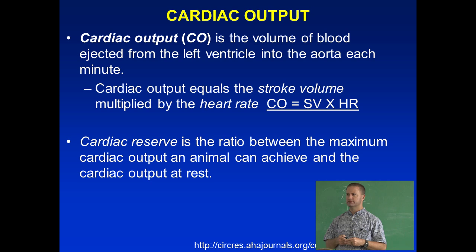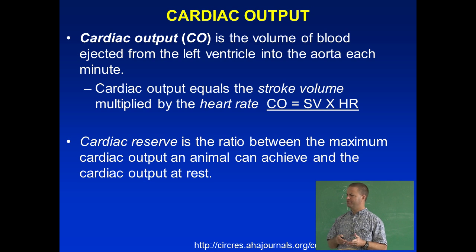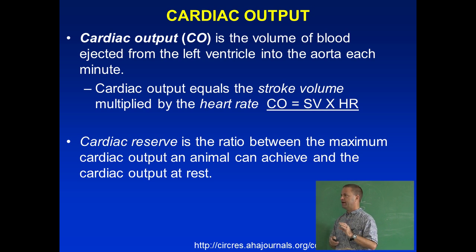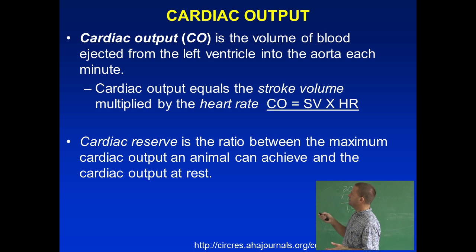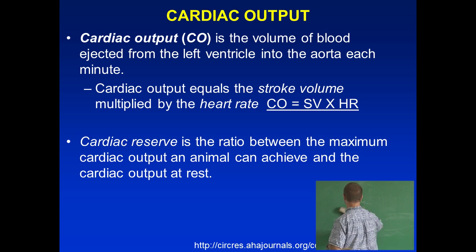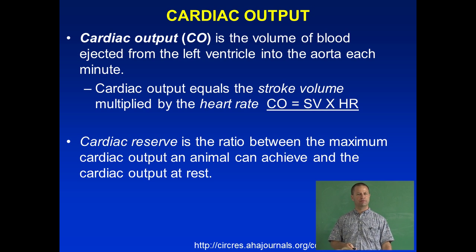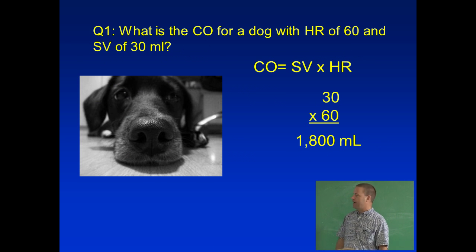What does 30 mils look like? Think about what a shot of alcohol is — one shot is about 1.5 ounces, around 45–50 mils, so 30 mils is a very small quantity of fluid. If that animal has a heart rate of 60 and a stroke volume of 30, what is the cardiac output? 30 times 60 is 1,800 milliliters per minute.